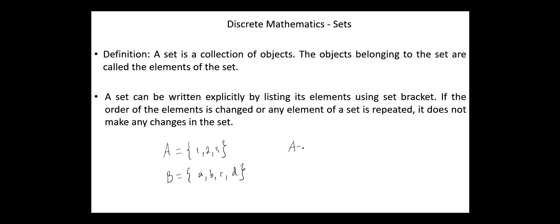For example, the set A can be written as {2, 3, 1}, and the set B as {C, D, A, B}. And the elements may be repeated. For example, the set A = {1, 1, 2, 3, 3}. In some definitions, the sets should not contain any repeated elements.